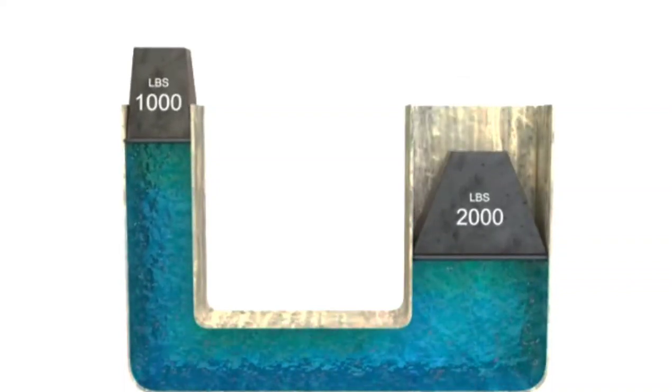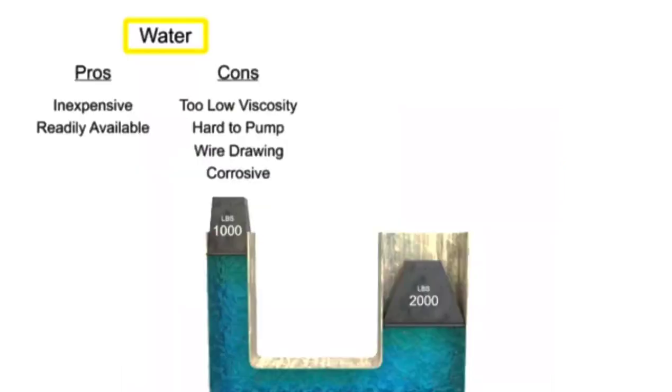Years ago, water was used as the first hydraulic fluid because there was no other liquid available in such large quantities at such a low cost. There are some major drawbacks to using water as a working fluid. Due to its low viscosity, it is difficult to pump.